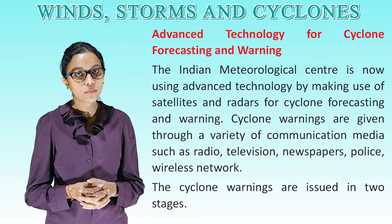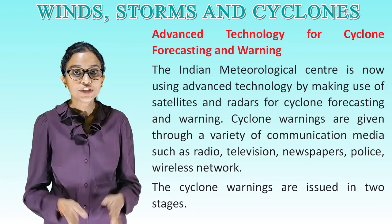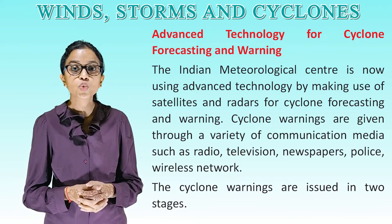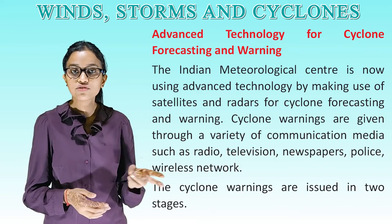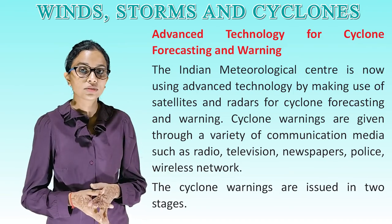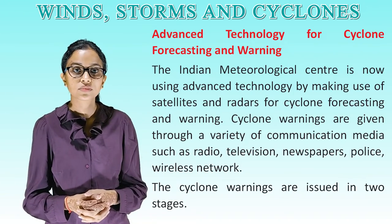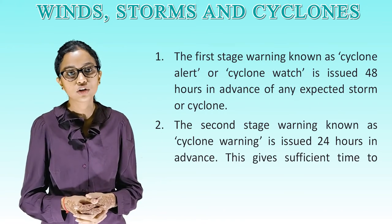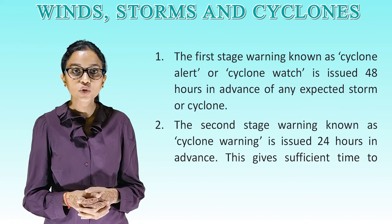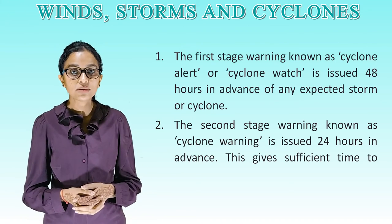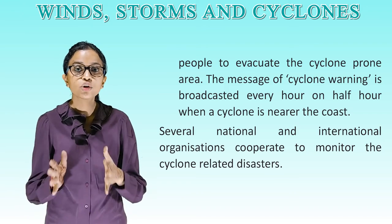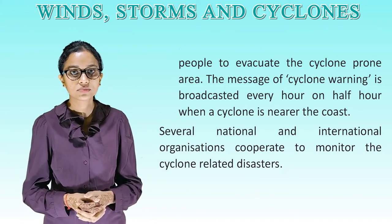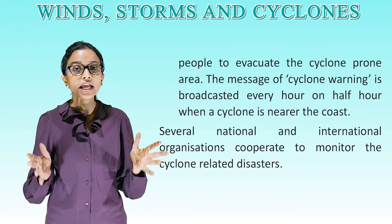Advanced Technology for Cyclone Forecasting and Warning: The Indian Meteorological Centre is now using advanced technology with satellites and radars for cyclone forecasting and warnings. Cyclone warnings are given through a variety of communication media such as radio, television, newspaper, police, and wireless networks. Cyclone warnings are issued in two stages: the first stage warning, known as cyclone alert or cyclone watch, is issued 48 hours in advance of any expected storm or cyclone; the second stage warning, known as cyclone warning, is issued 24 hours in advance, giving sufficient time for people to evacuate the cyclone-prone area. The cyclone warning message is broadcast every hour or half hour when the cyclone is near the coast. Several national and international organizations cooperate to monitor cyclone-related disasters.